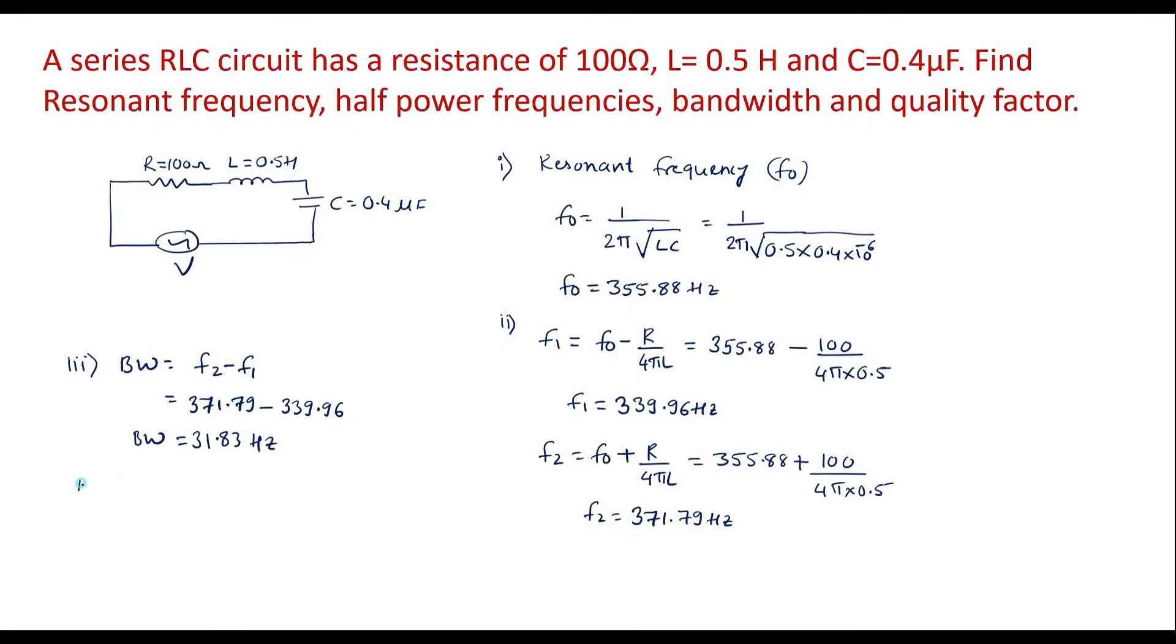Now let us calculate quality factor. So quality factor Q is equal to omega 0 L by R which is 2 pi F0 L by R. Simplifying this, Q is equal to 2 pi into F0 value is 355.88 into L value is 0.5 divided by R value is 100, simplifying this 11.18.